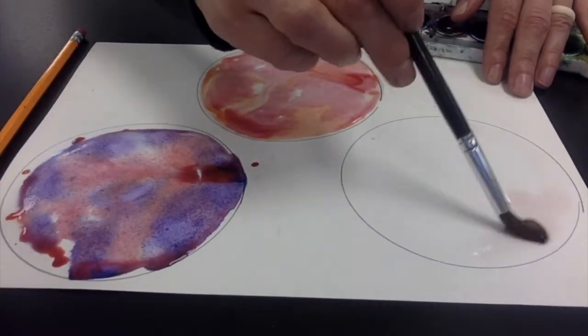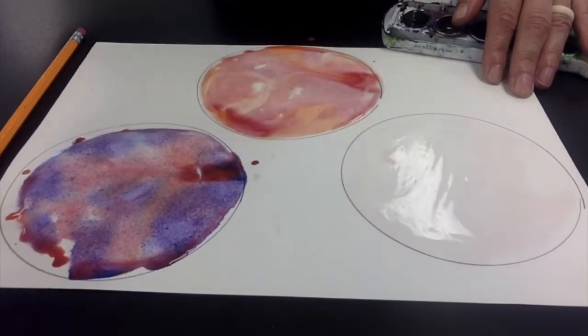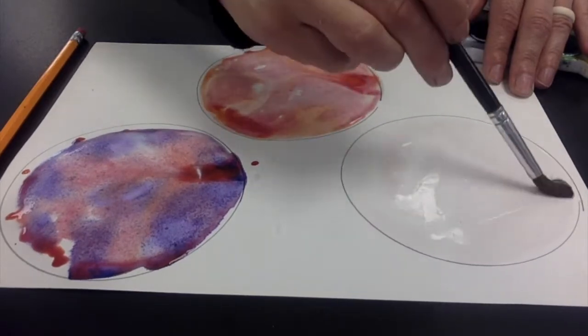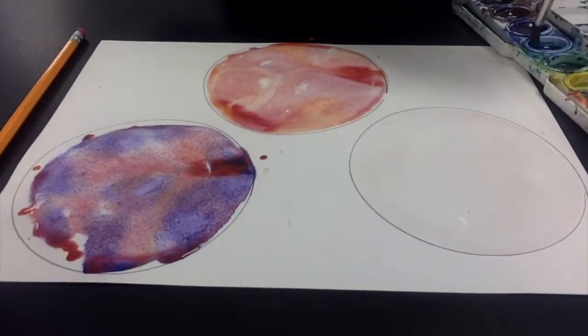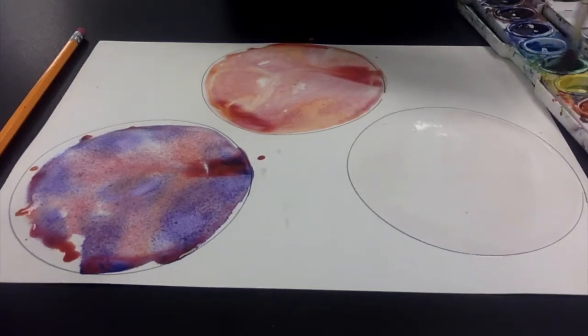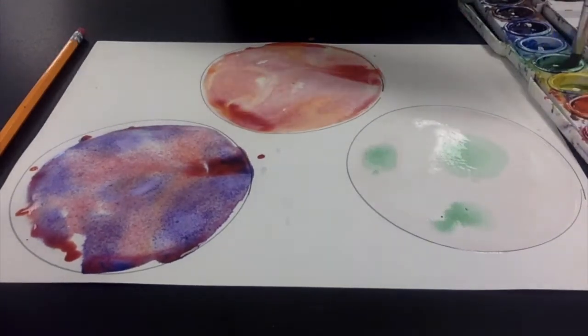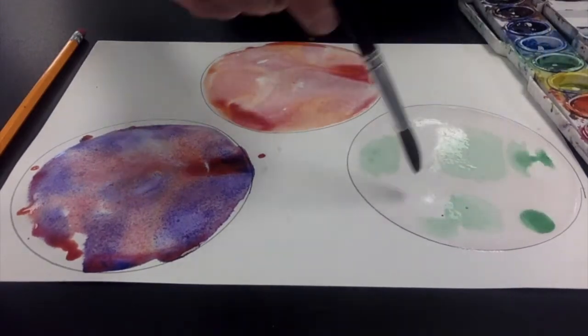I'm letting my colors mix and blend all on their own. I'm not doing any swirling or painting with the colors. Instead get your circle wet, dip your paint or your brush into the paint and let the paint start spreading in the water.